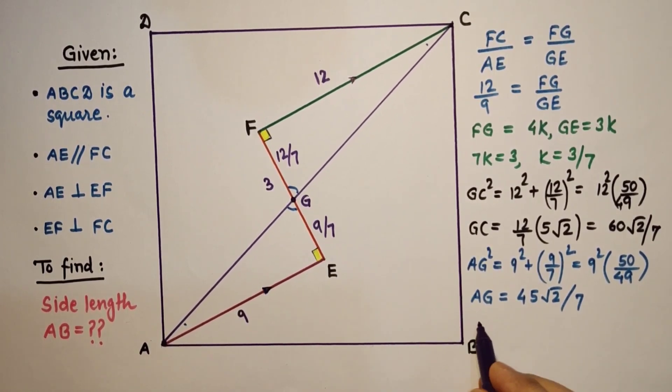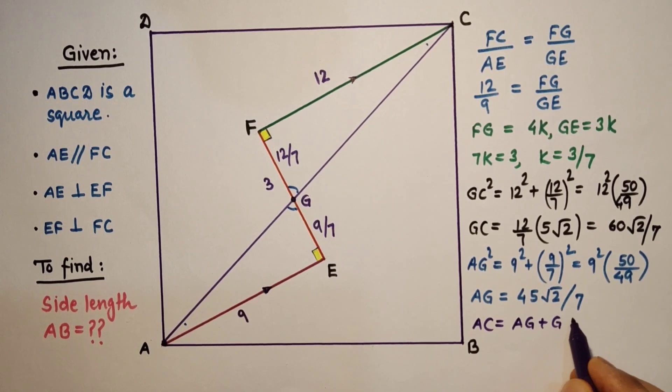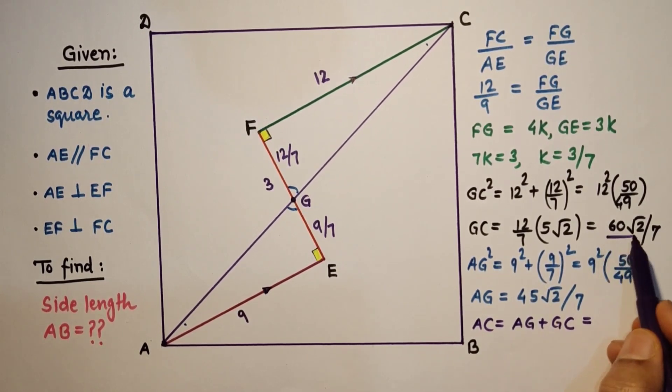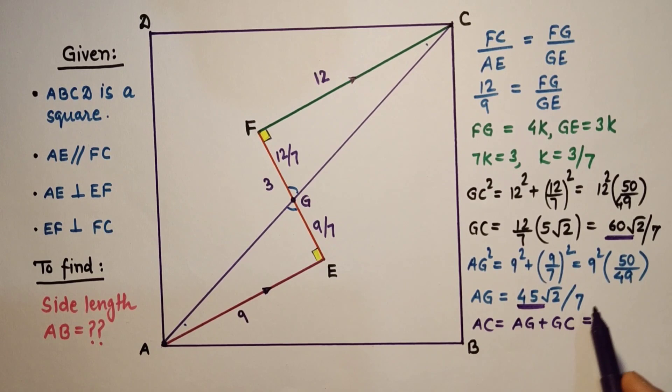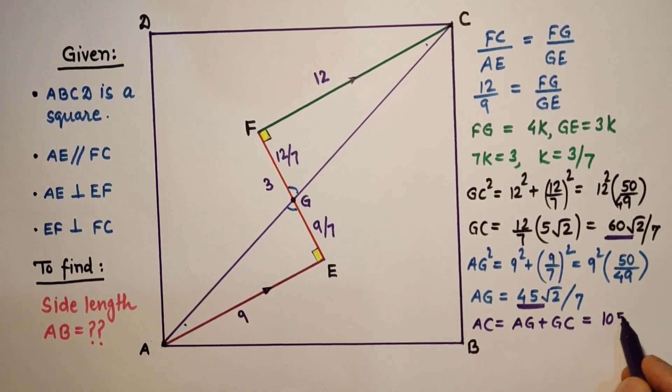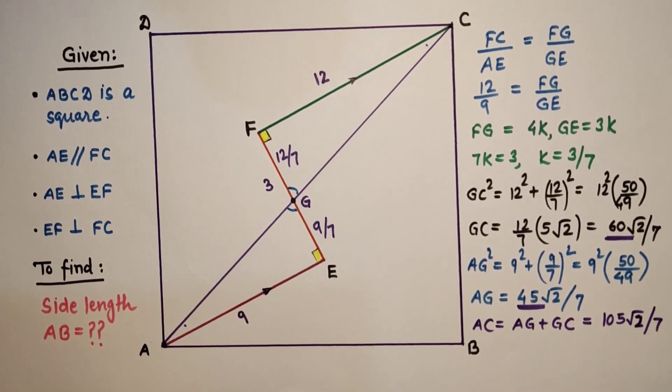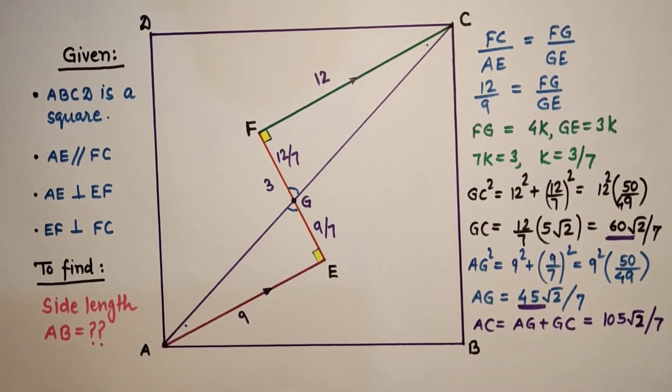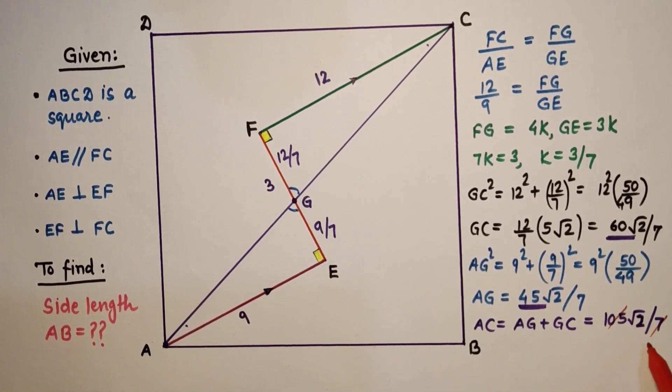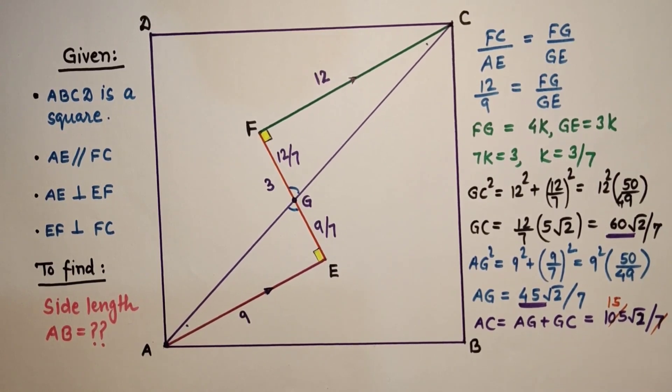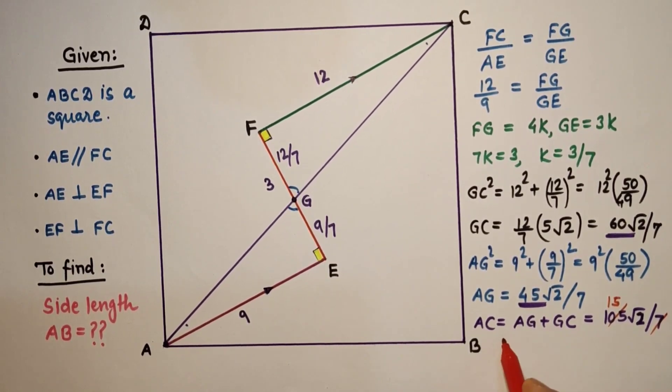So AC will therefore be AG plus GC, which is 60 root 2 by 7 plus 45 root 2 by 7, 105 root 2 by 7. This 7 and this 105 will get cancelled, it's 15 root 2. So AC is equal to 15 root 2 units.